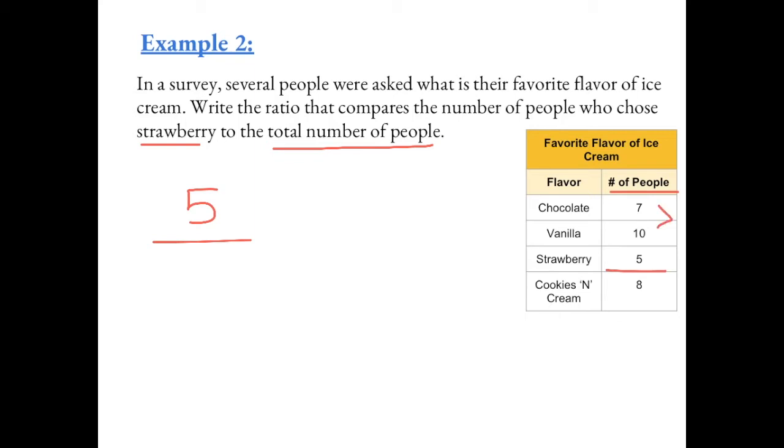7 plus 10 is 17, 17 plus 5 is 22, and 22 plus 8 more is 30. So there are 5 people who chose strawberry ice cream out of 30 people surveyed. Now we can simplify by dividing by 5. This gives us 1 out of 6. 1 in 6 people chose strawberry to the total number of people surveyed.